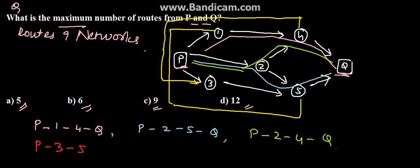Then we have P, 3, 5, Q. So this is P, 3, 5, and Q. Then we have P, 1, 5, Q. This is P,